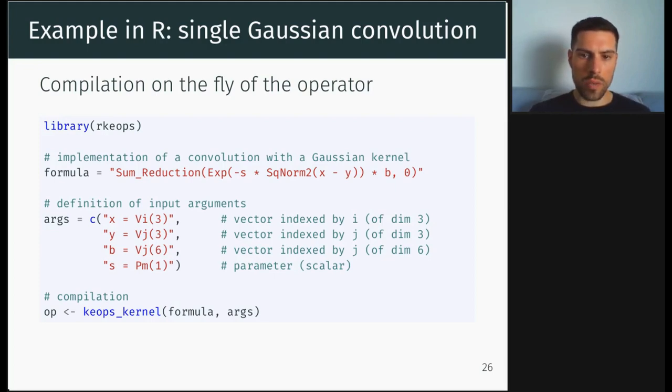So first you're going to write what is your computation using words. So here you have the square norm, so the square distance between the data, you apply the exponential, you multiply by the filter, and you do a reduction, a sum reduction over a dimension. It is your formula. Then you define the arguments of your formula and their dimension. So x is a vector indexed by i of dimension 3, y is a vector indexed by j of dimension 3, and b is a vector indexed by j of dimension 6. s is just a scalar parameter.